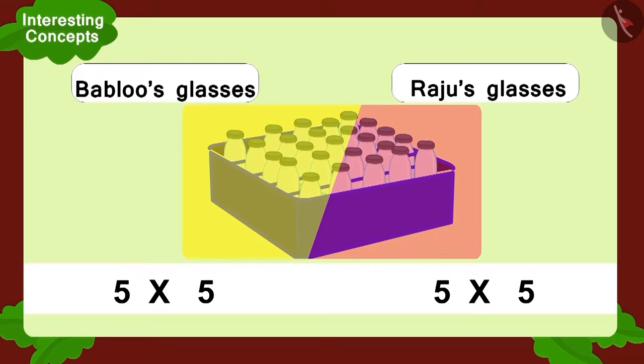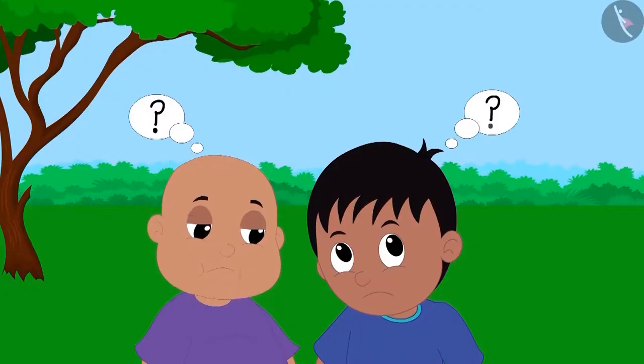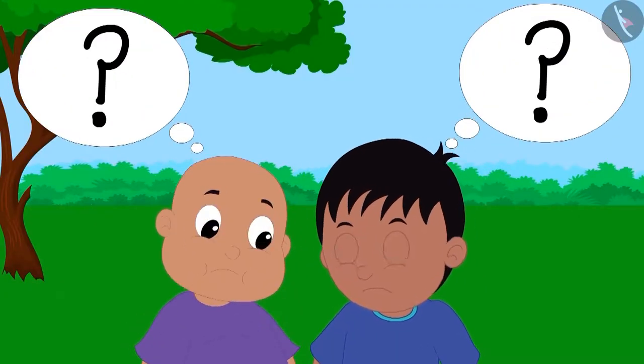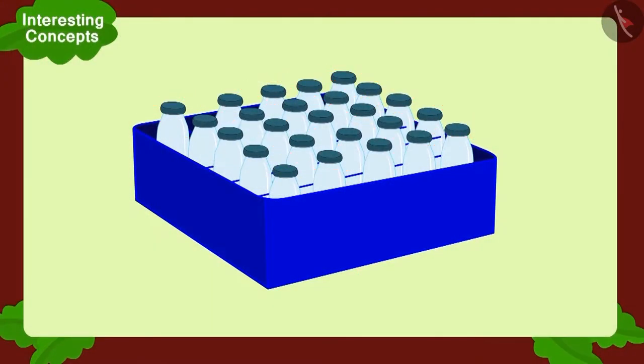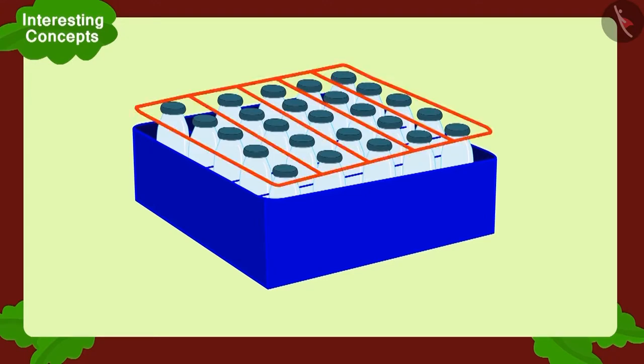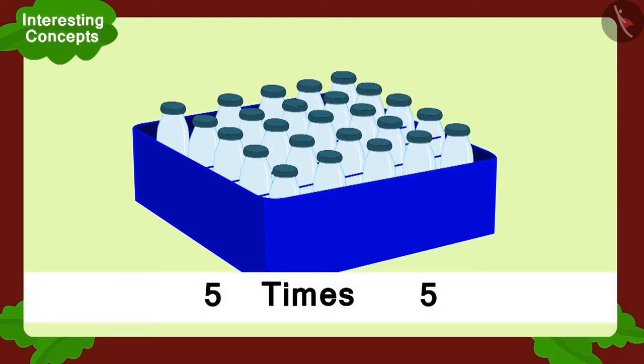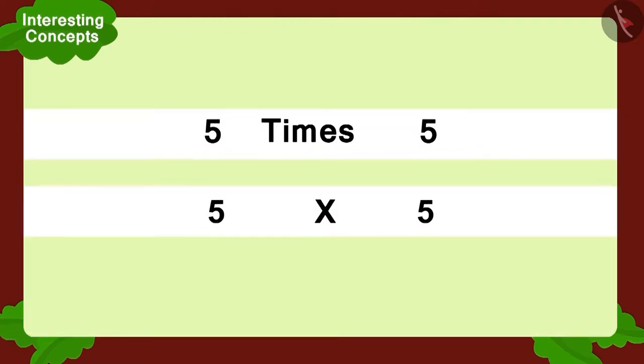But what is this? They saw the same multiplication through their glasses. Both were shocked. How is it possible? What will happen if we write the multiplication of vertical slots? Five vertical slots and five bottles in each slot. Once again, the same. That means, five times five or five multiplied by five.